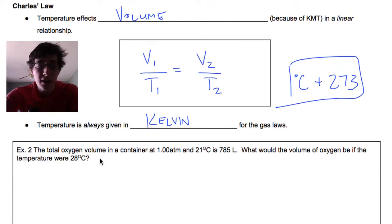So example number two, the total oxygen volume in a container at one atmosphere is 21 degrees Celsius, so this is a temperature, and 785 liters, so we have a volume. What would the volume be if the temperature were 28 degrees Celsius, so we have temperature two. So T1, V1, V2. We do not need pressure in this example, so we're going to ignore that.